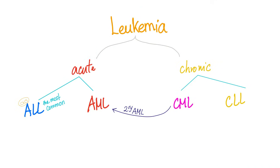Leukemia has acute or chronic subtypes. Acute includes ALL or AML. Chronic includes CML or CLL. Importantly, CML can cause AML — in that case we call it secondary AML, versus de novo AML which arises on its own.